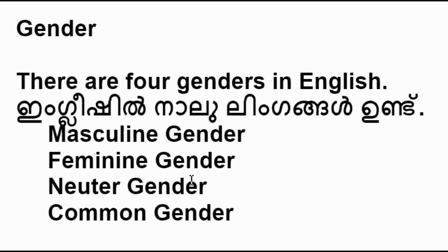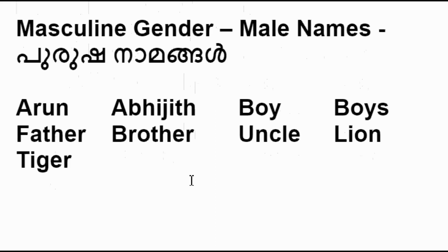Gender. There are four genders in English: masculine gender, feminine gender, neuter gender, and common gender. Masculine gender refers to male names — for example: Arun, Abhijit, boy, father, brother, uncle, lion, tiger, etc.